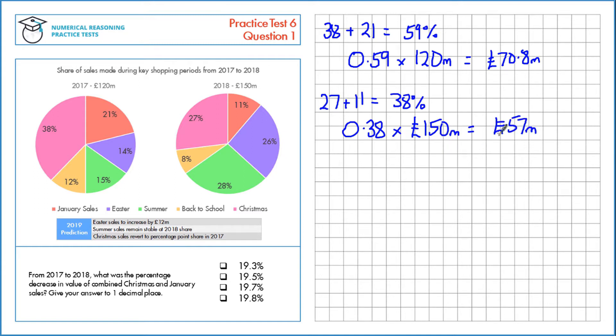So to calculate the percentage decrease, we'll take the new figure, that's 57 million, take away the old figure, 70.8, and divide by the old figure, 70.8. These are all in millions, so we don't need to use those units. Then multiply by 100 to find it as a percentage. That gives us negative 19.5%, which is a percentage decrease of 19.5%.